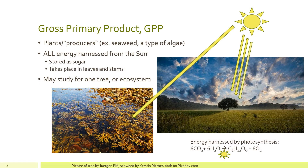Gross primary production, or GPP, is all of the energy that gets harnessed from the sun by plants and other autotrophs — organisms that can take in energy from the sun and produce sugars through photosynthesis. Many of these producers are plants on land, but there's also algae and phytoplankton in water that can harness energy from the sun.